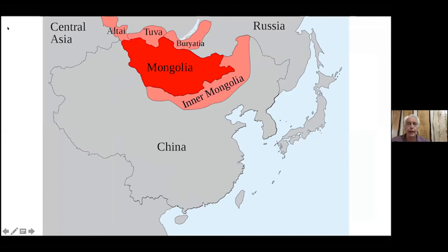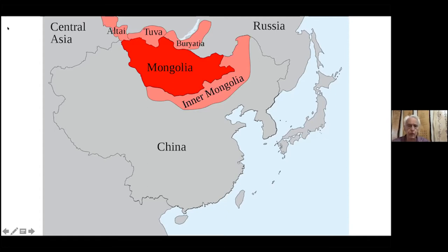As pretty much everybody knows, the Mongol Empire at one point stretched all the way from Poland to Korea. Over the course of the next centuries it began to recede. What we're looking at here is a current map created by our graphic designer and producer Aric Julian of the Mongol lands today. There are three areas, all in slightly different positions.